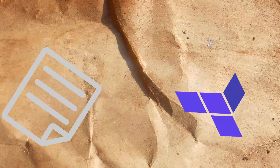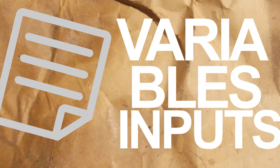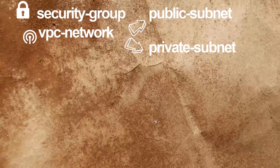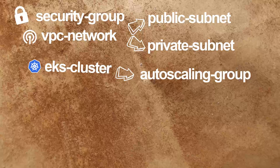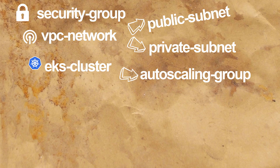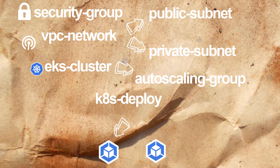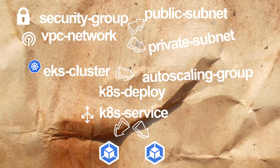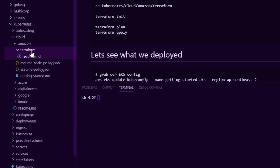Terraform allows us to describe everything as a file or multiple files and piece them together. So next I'll create a Terraform file. We're going to describe a bunch of variables as inputs, describe a security group for our infrastructure, describe a VPC network with public and private subnets, describe an EKS cluster with an auto-scaling worker group for our nodes, describe a Kubernetes deployment with two pods running nginx, and finally describe a Kubernetes service of type load balancer to make nginx public.